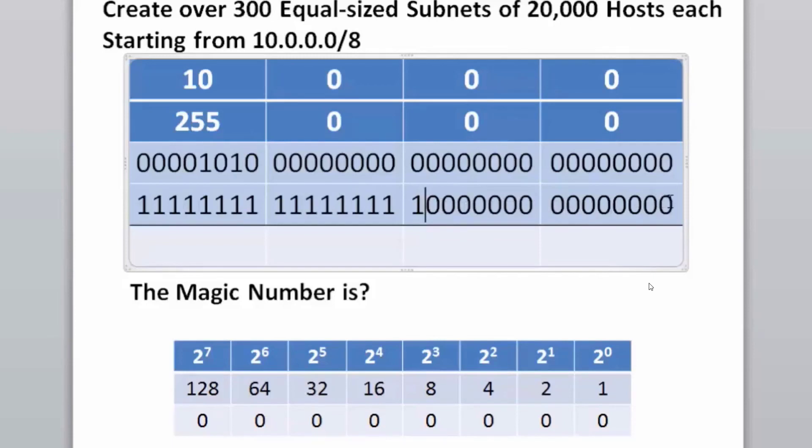What about the requirement of 20,000 hosts each? We have 15 zeros left for hosts per subnet. 2 to the 15th power is 32,768 minus 2 would be 32,766 hosts per subnet. That meets the requirement of having at least 20,000 hosts in each subnet, so this scenario would work.